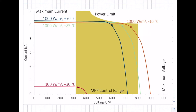The green curve represents the standard testing conditions: 1000 watts per square meter, a module temperature of 25 degrees Celsius, and an air mass of 1.5. You can see the slope of the curve with the maximum power point marked with a green spot.